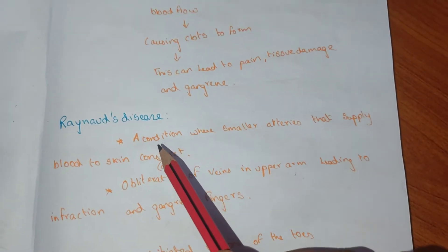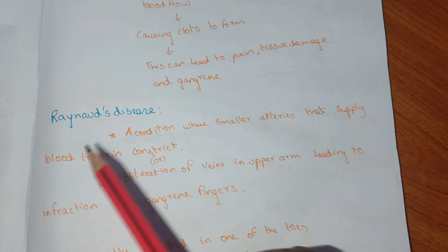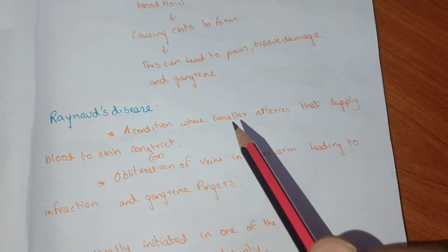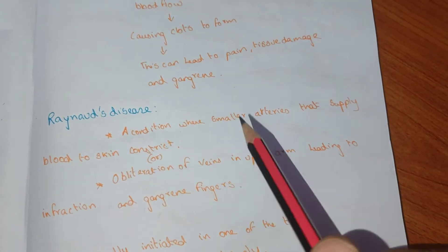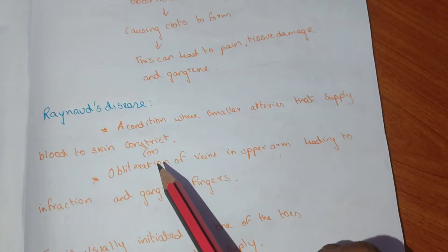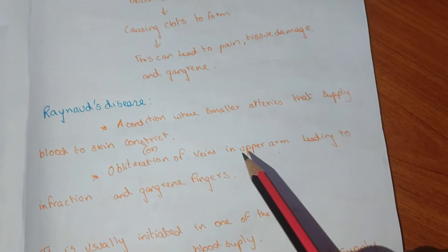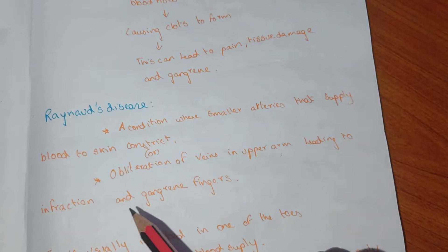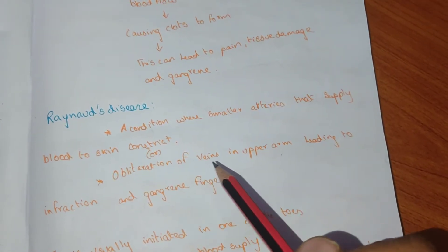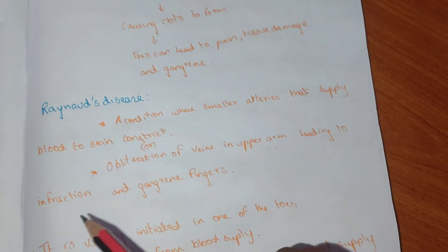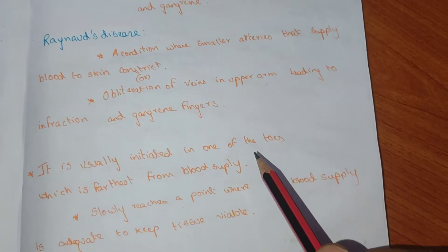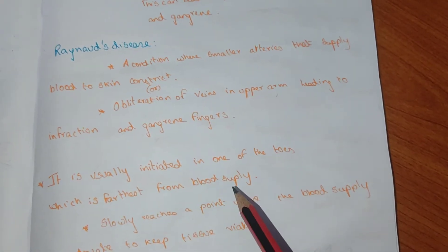Raynaud's disease is a condition where smaller arteries that supply blood to the skin constrict, leading to reduced blood supply and gangrene formation. Obliteration of the vein in the upper arm can also lead to infarction and gangrene of the fingers.